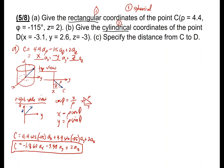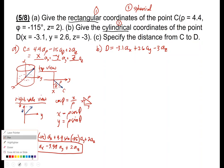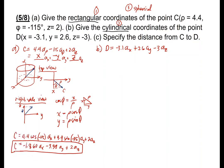For B it is the reverse. Find the cylindrical coordinates of point D, which is given as negative 3.1 AX, plus 2.6 AY, minus 3 AZ. We need to convert this into cylindrical form. From the top view, given the sides X and Y, we need to solve for rho and phi.